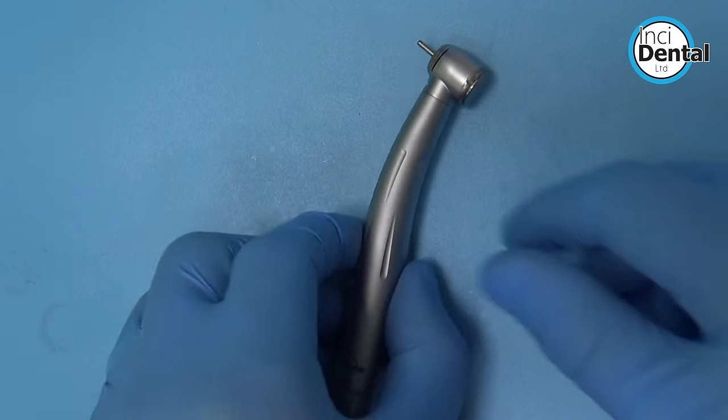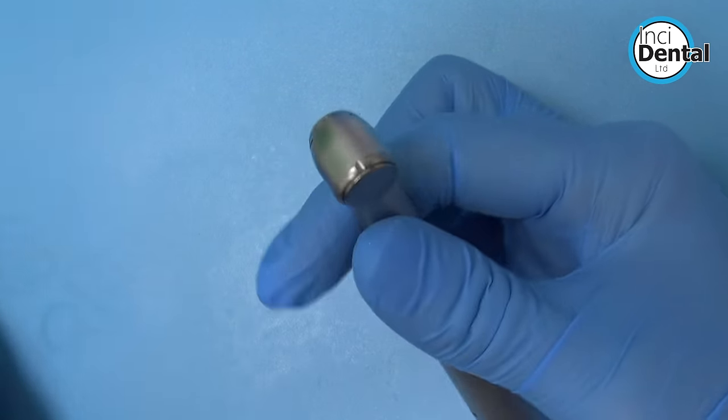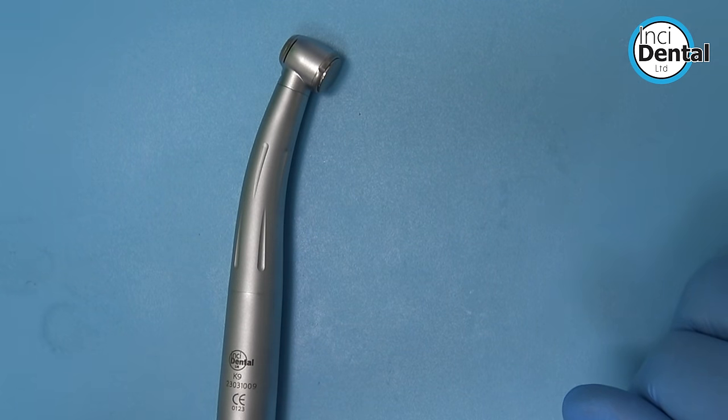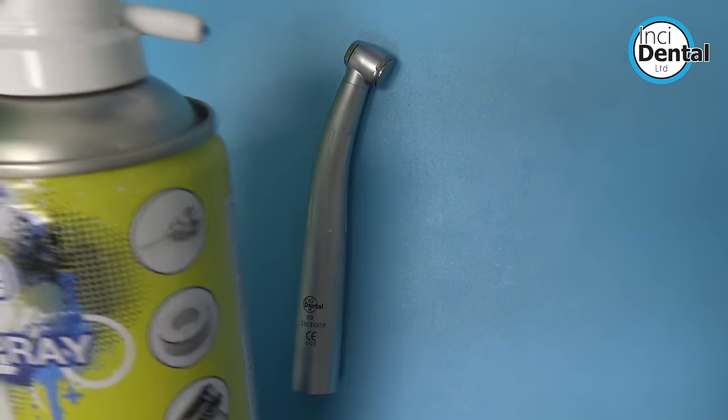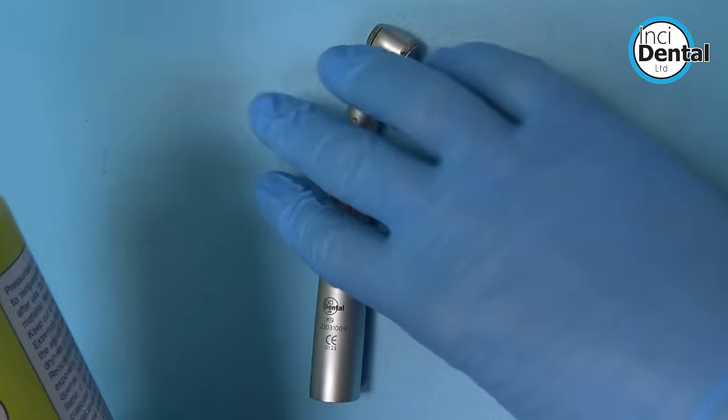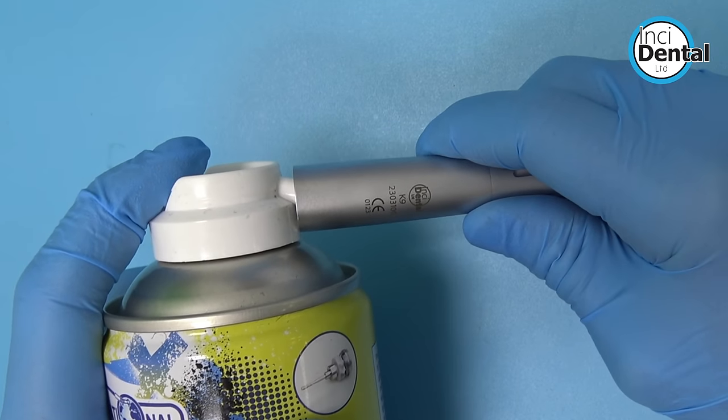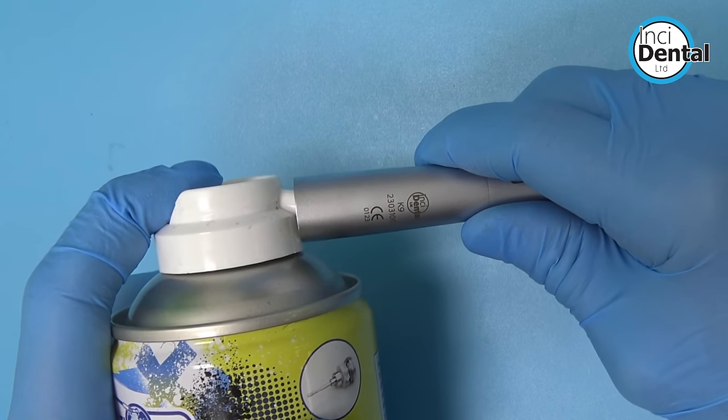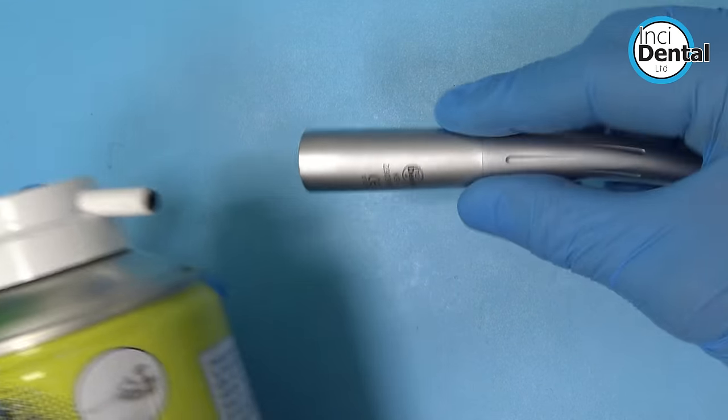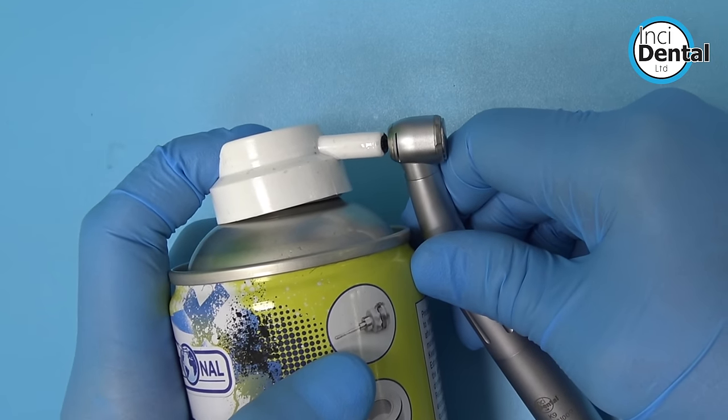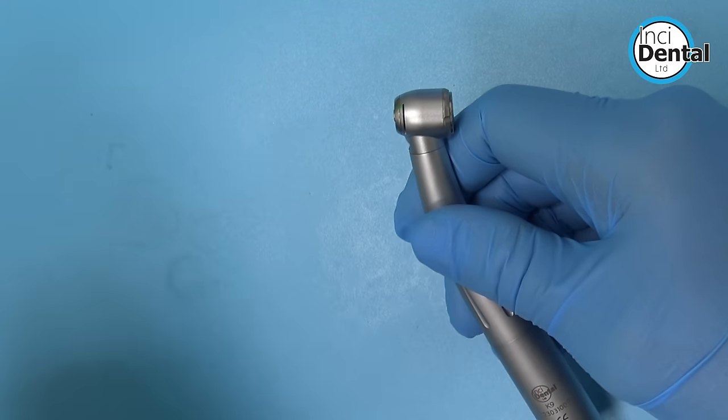So first you want to remove any inserted rotary instrument. Then you can rinse the outer body of the handpiece with water, scrub it with a brush, and your aim here is just to remove any debris. Next up, take your lubrication can, hold the can upright and insert the nozzle right into the connection end of the handpiece, and then it's just a two second spray. You can then do a quick spray in the chuck end, and that's it.